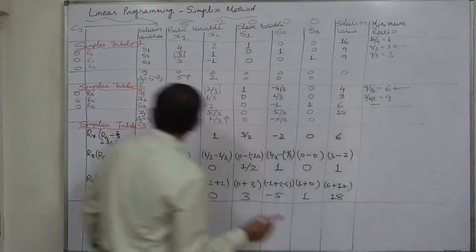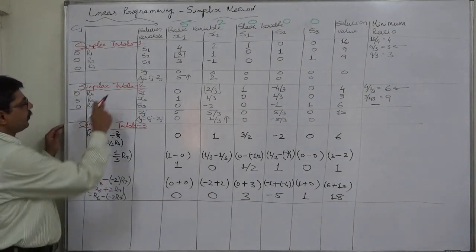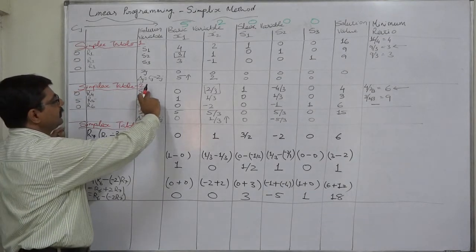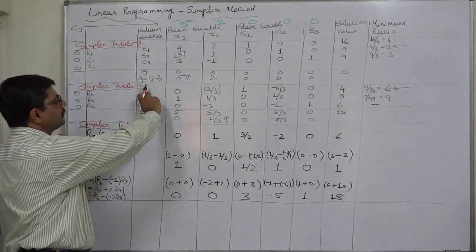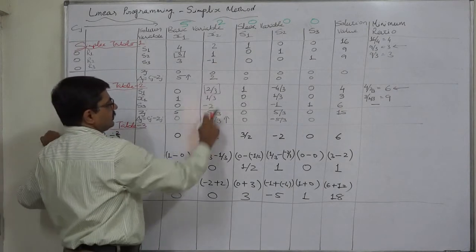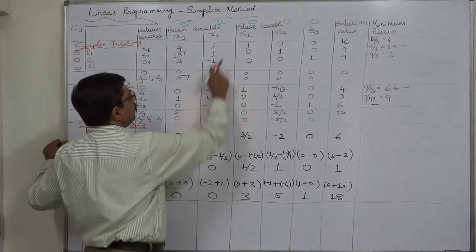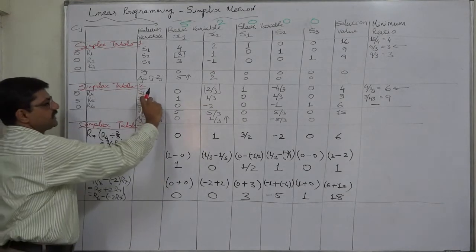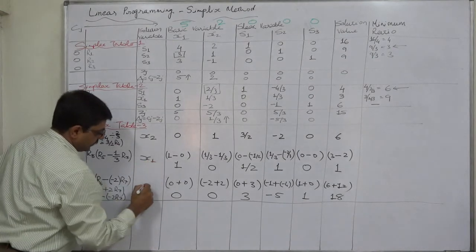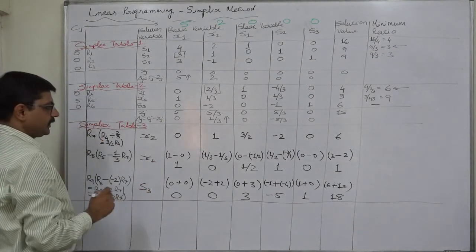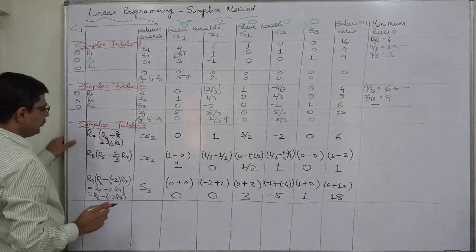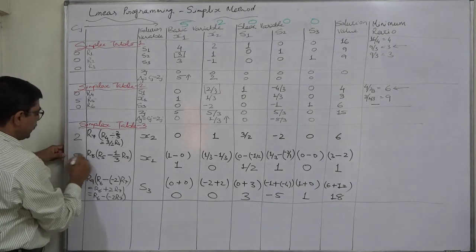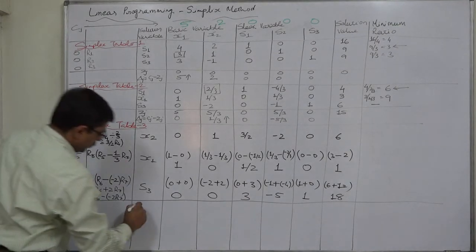First we will write the variables. Since R4 was the key row, we have to change its variable: S1 will be dropped and in its place the variable of the key column will be entered, that is X2. So the first row will now be X2. There is no change in the other two rows: X1 and S3 will remain as they were in the second table. The respective Cj values are: for X2 it is 2, for X1 it is 5, for S3 it is 0.